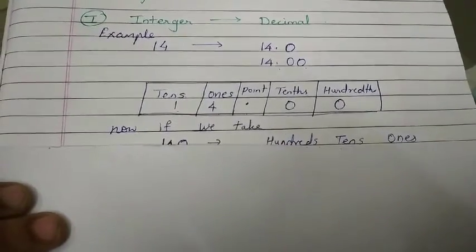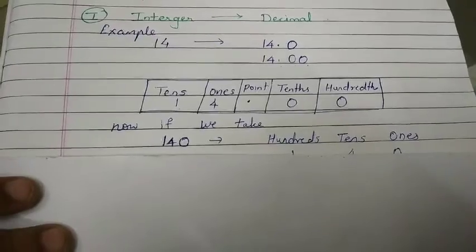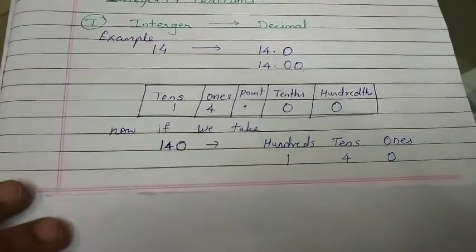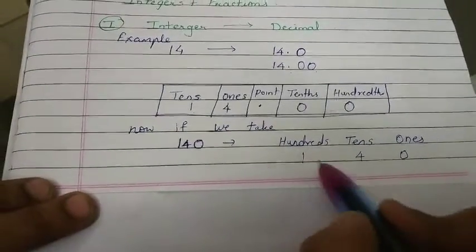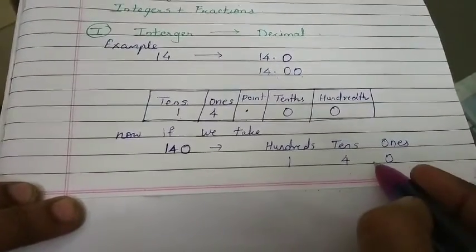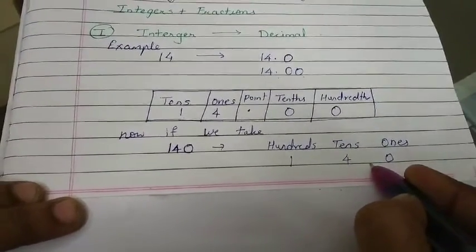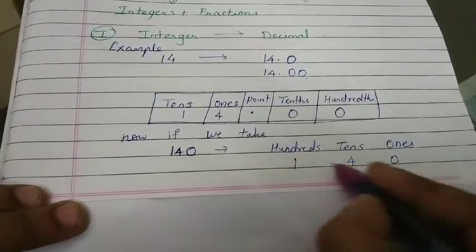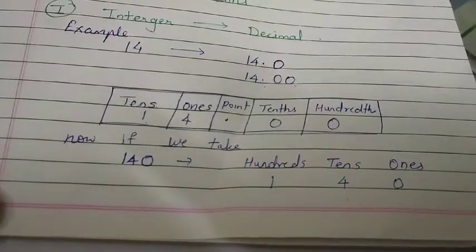Now, if I take 140 instead of 14.00, you can see that the value has changed. So, you can see that if I don't give one decimal point in between 14 and 0, the value will change.